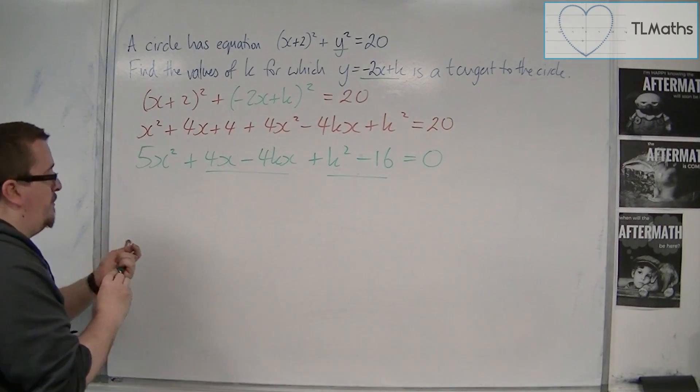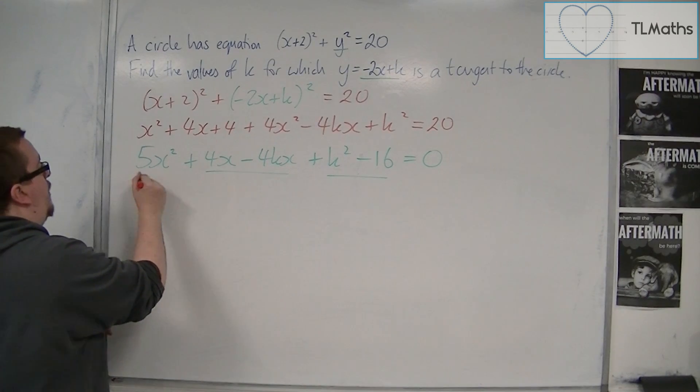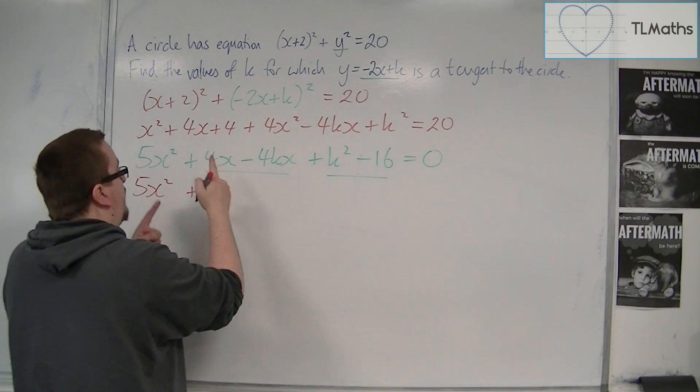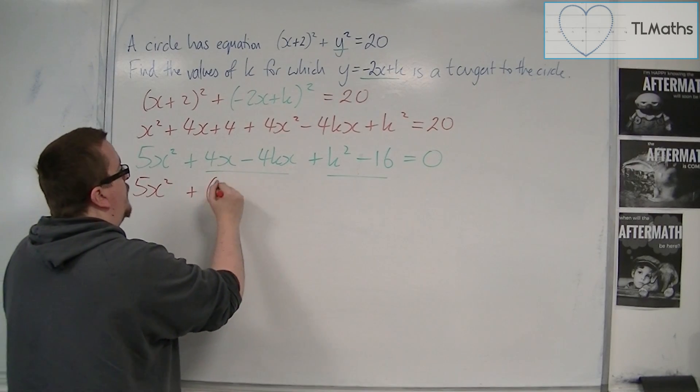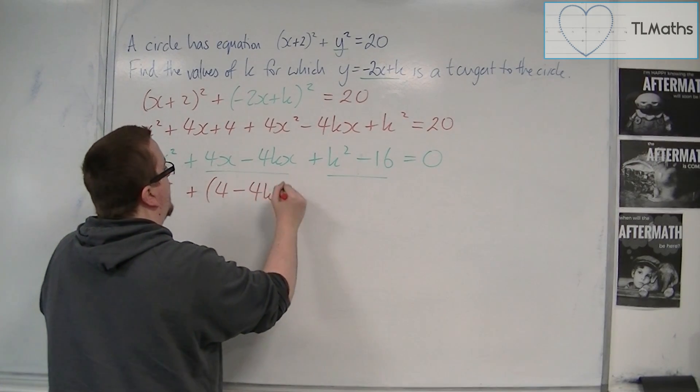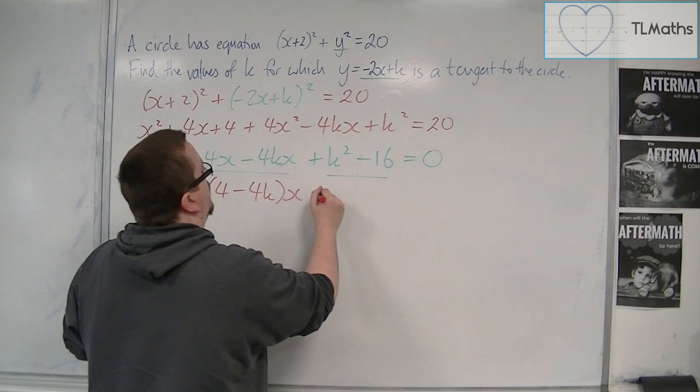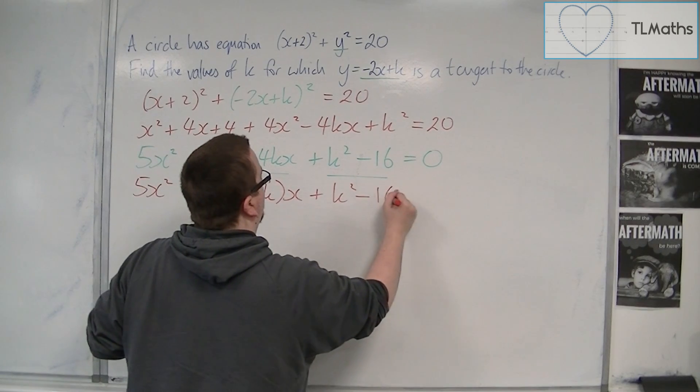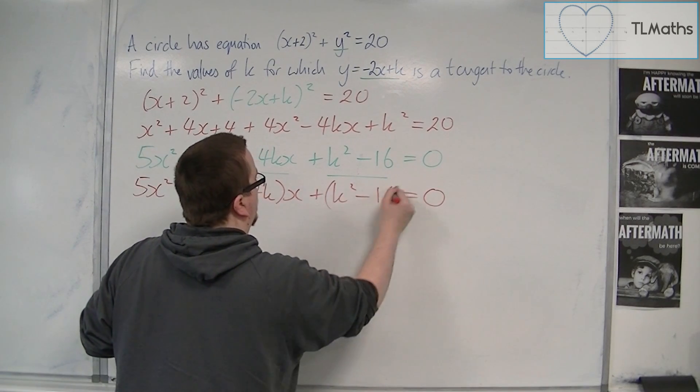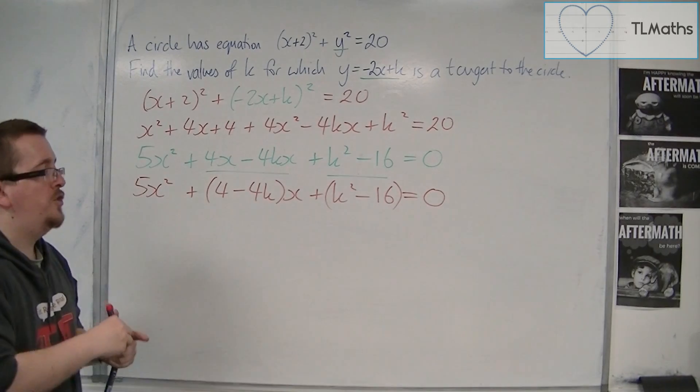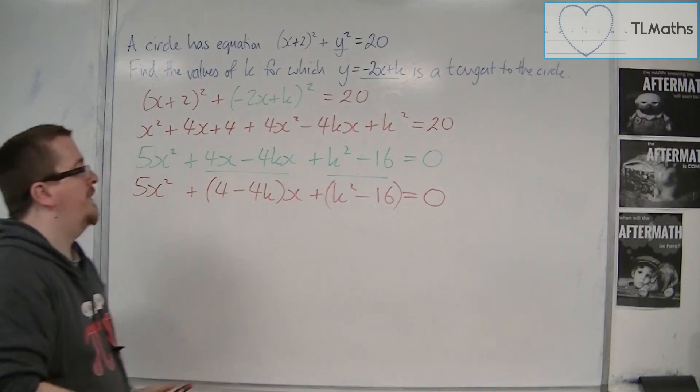So what I'm going to do is I'm going to tidy this up. So I've got 5x² + (4 - 4k)x + k² - 16 = 0. I'm going to pop that in a bracket just to symbolize that we're grouping that bit together.